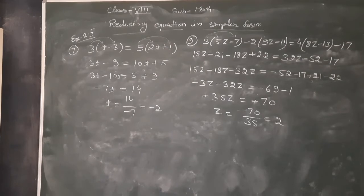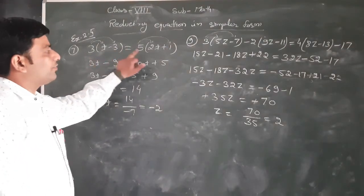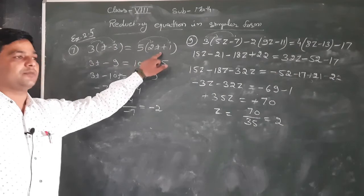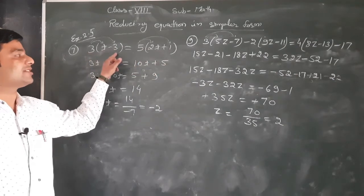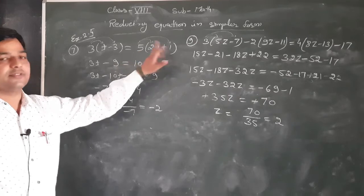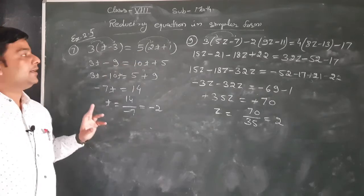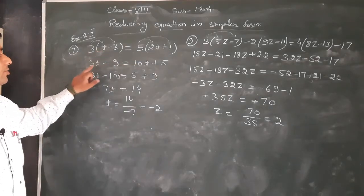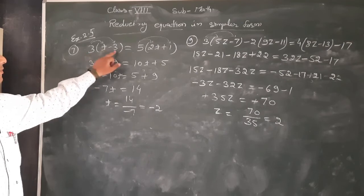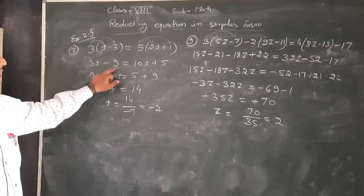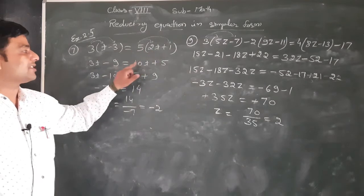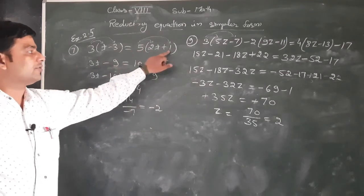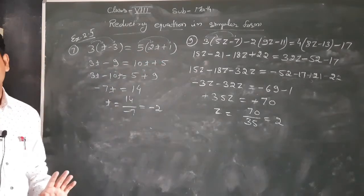Question number 7 कर रहे हैं। जो दिया हुआ है: 3(t - 3) = 5(2t + 1)। Distribute करेंगे — 3 को t और minus 3 से, 5 को 2t और 1 से। 3×t = 3t, 3×(-3) = -9. Equals to: 5×2t = 10t, 5×1 = 5.